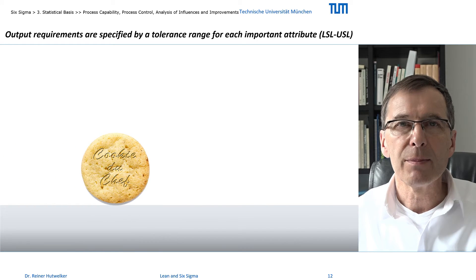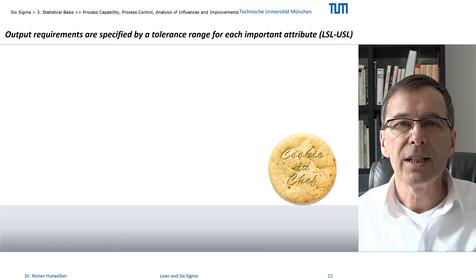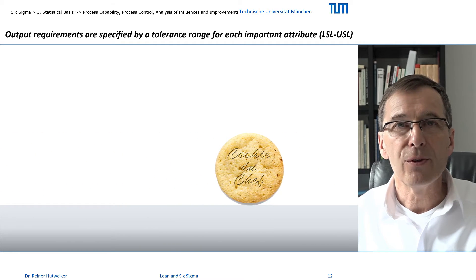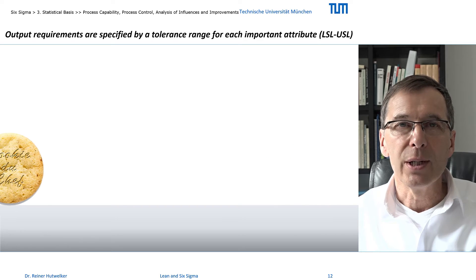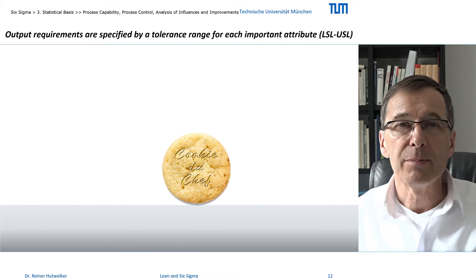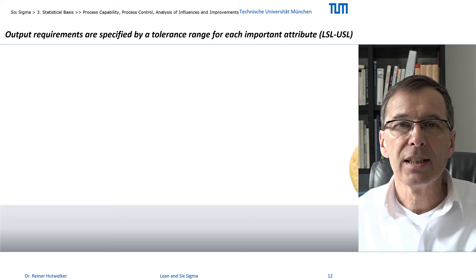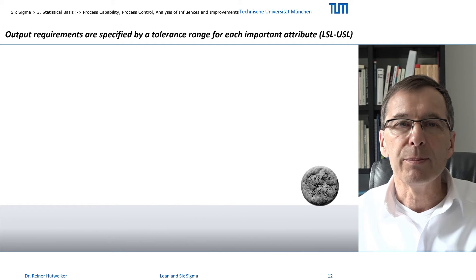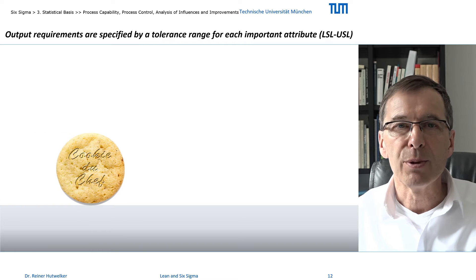You know that the term Six Sigma also indicates a specific level of process capability. At this level only 3.4 errors are expected in one million outputs. Process capability generally reflects the performance of a process to meet the requirements of an important attribute of the output.